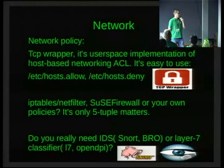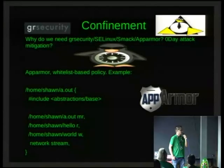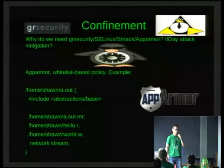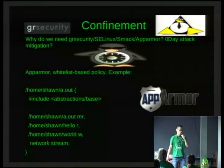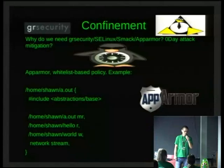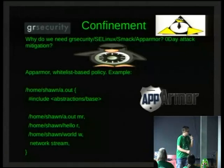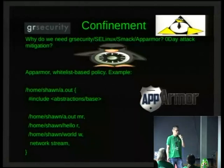The next topic is confinement. Before the Snowden disclosures, in China almost no one cared about using confinement technology to prevent zero-day attacks. But now things have changed a little, and more people in China are paying attention to confinement. For Linux confinement implementations, there is SELinux, AppArmor, and SMAC. SELinux is probably the most powerful but it's really hard to use.